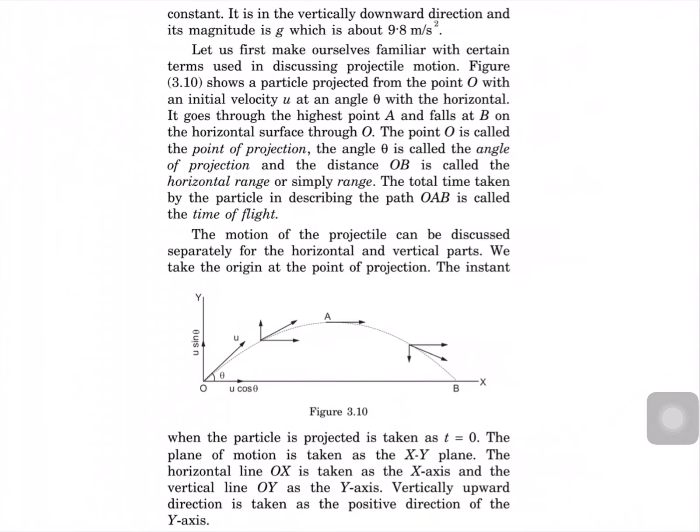You can see the picture. If you throw a stone or object from point O, it will reach a point A and then reach point D. At each and every point in the path, the particle will have horizontal and vertical velocity. I am going to derive the relation for maximum height and time of flight.